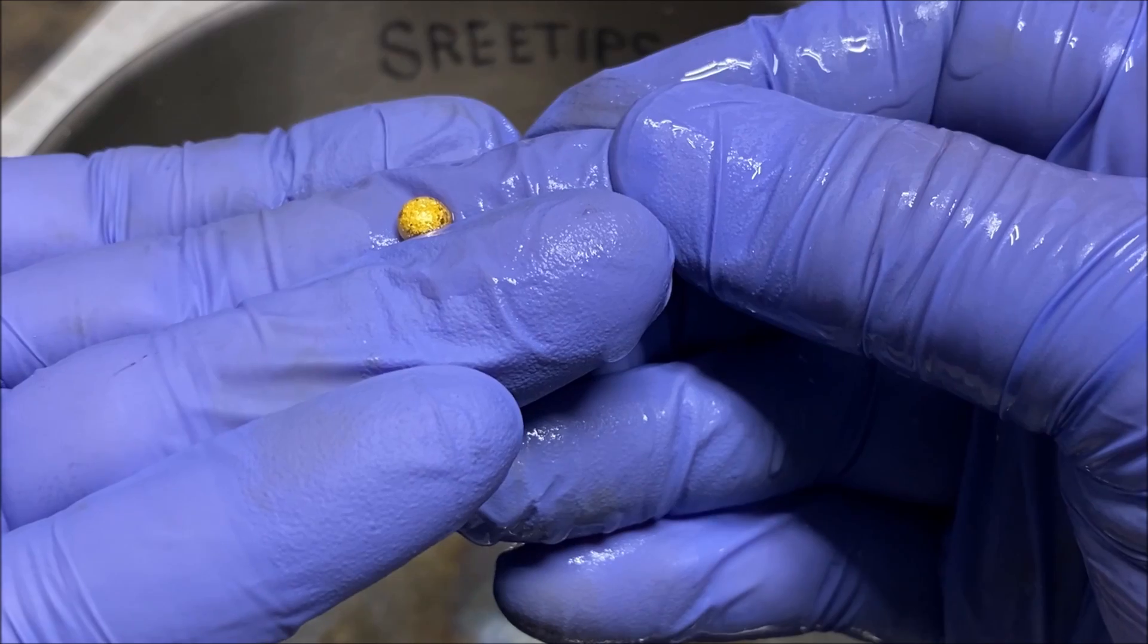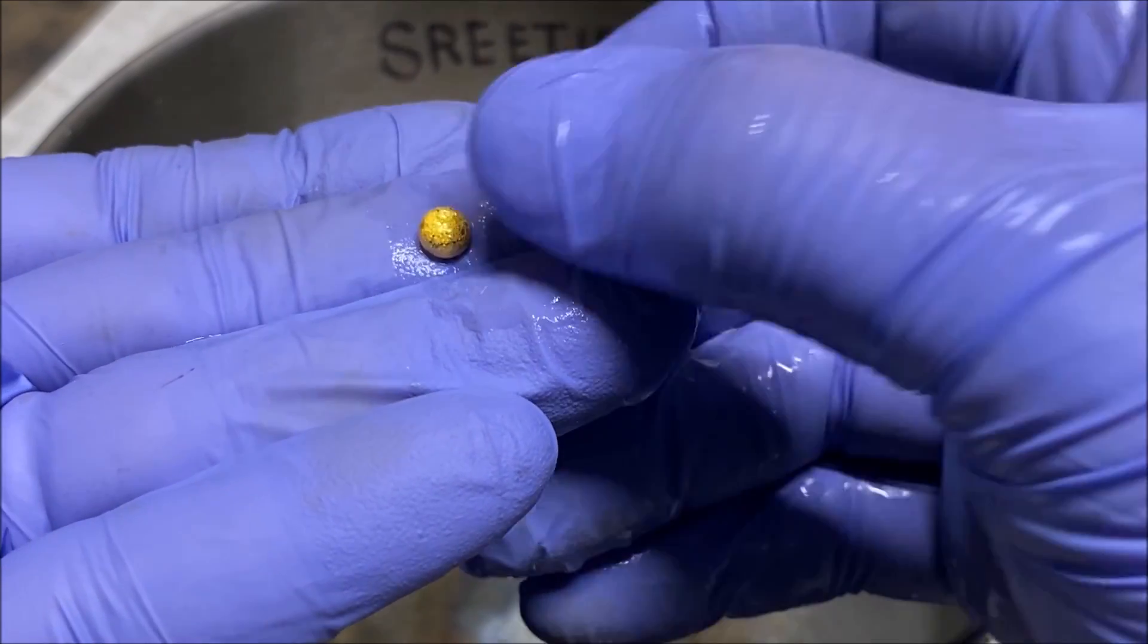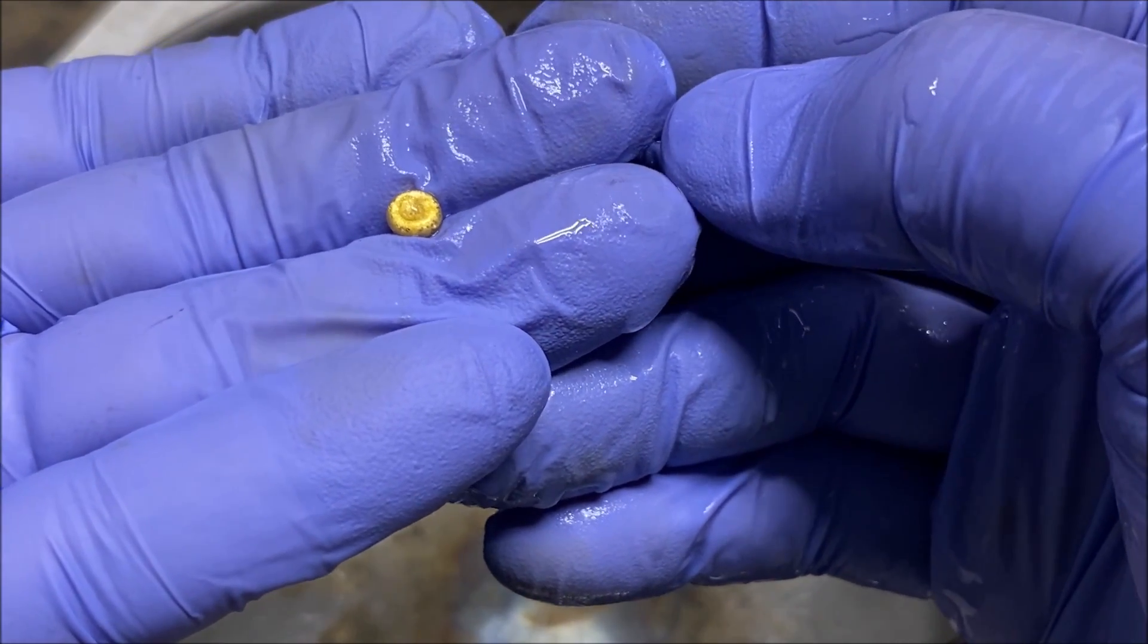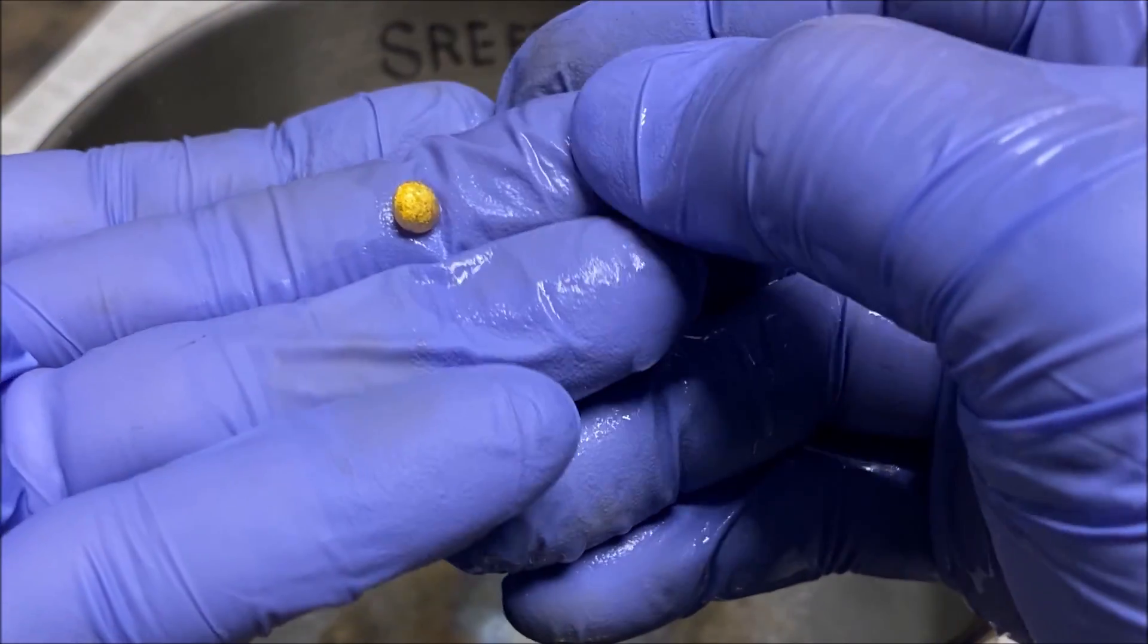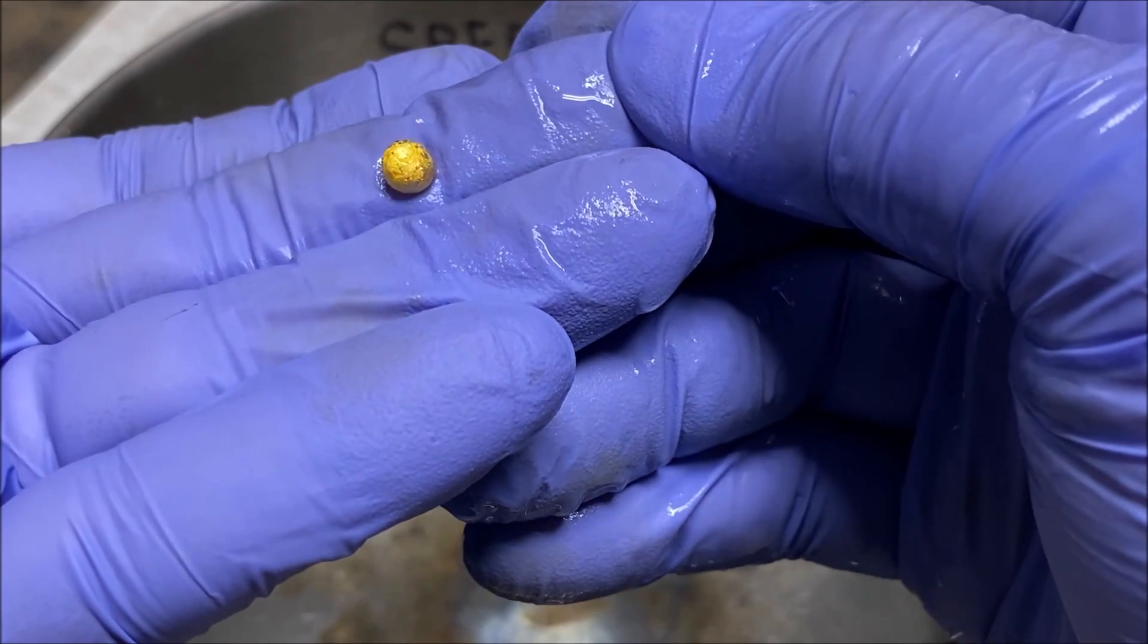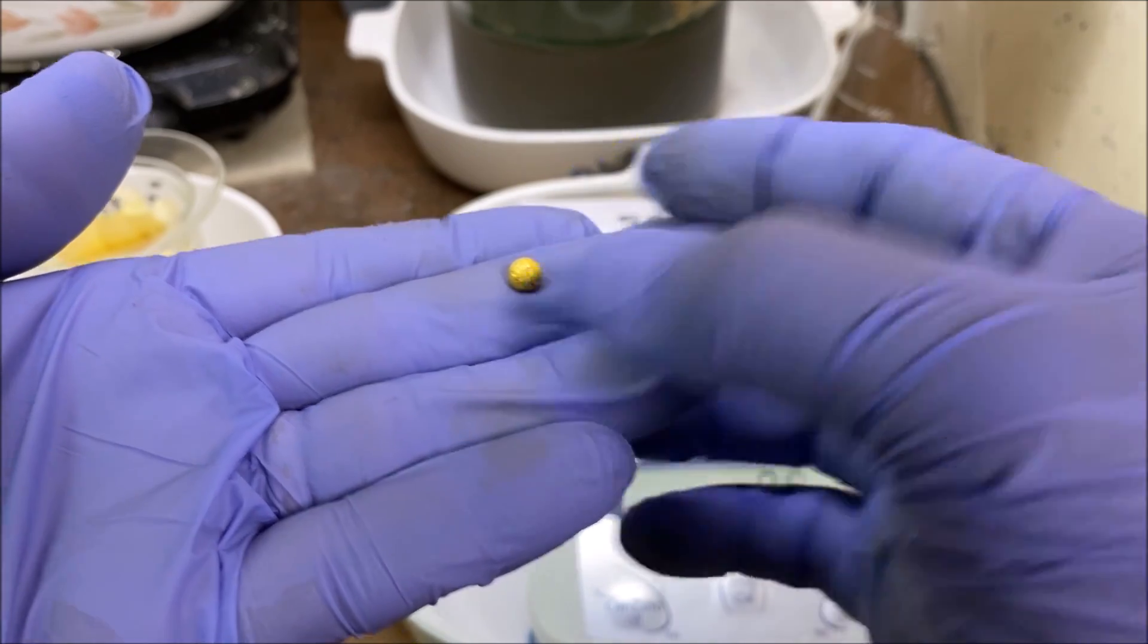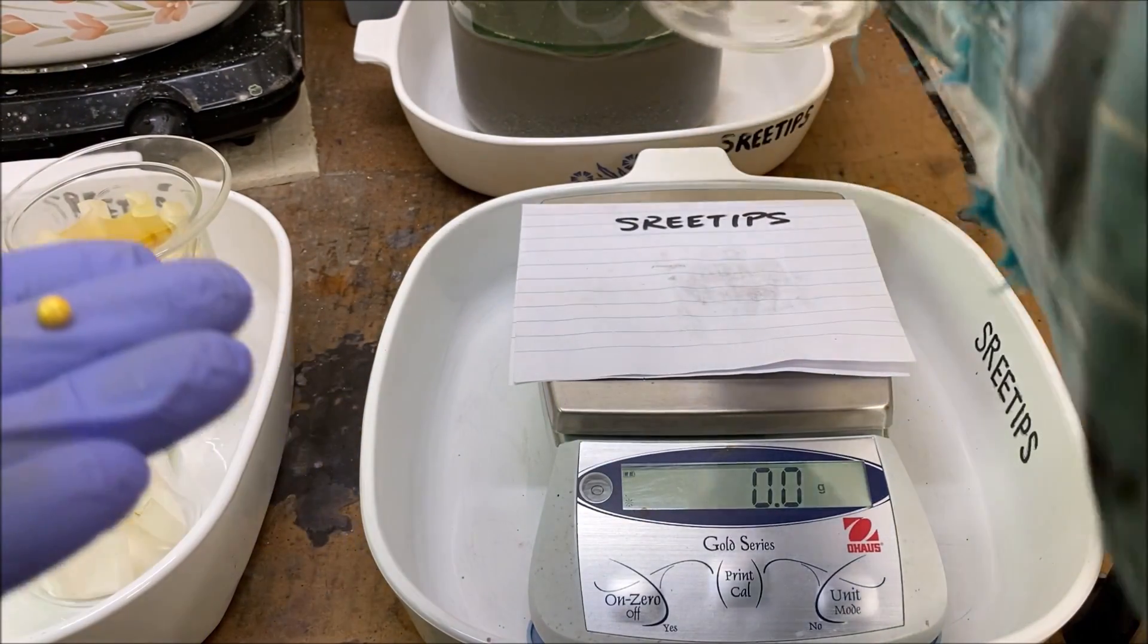It's probably going to be about between 1 and 2 grams. It's not very pure, you can tell by the color. It's got some other metals mixed in with it. Here's our little bead of gold that we just recovered from these solids.